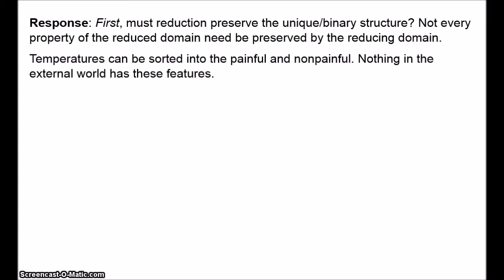One response to this kind of problem is to ask: must a reduction preserve the unique binary structure? Not every property of the reduced domain needs to be preserved by the reducing domain. The reduced domain here is colour; the reducing domain is spectral reflectances. Consider temperature. Very high temperatures and very low temperatures cause pain, at least given appropriate pressures, so we can sort temperatures under a given pressure into those that cause pain and those that don't. We don't require anything in the world to match this structure in order to say that temperature is reducible. Temperature is reducible to the mean kinetic energy of molecules, but nobody would suppose that a certain set of mean kinetic energies have the property of pain whereas others don't.